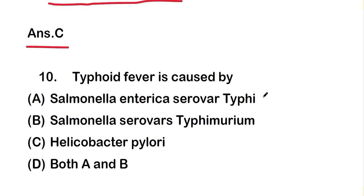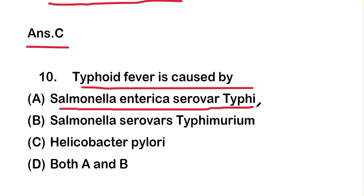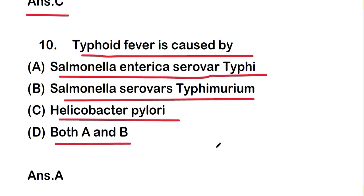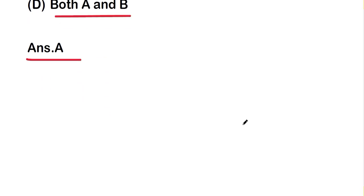The next question is: typhoid fever is caused by which organism? The options are Salmonella enterica serovar Typhi, Salmonella serovar Typhimurium, Helicobacter pylori, or both A and B. The right answer is option A — Salmonella enterica serovar Typhi.